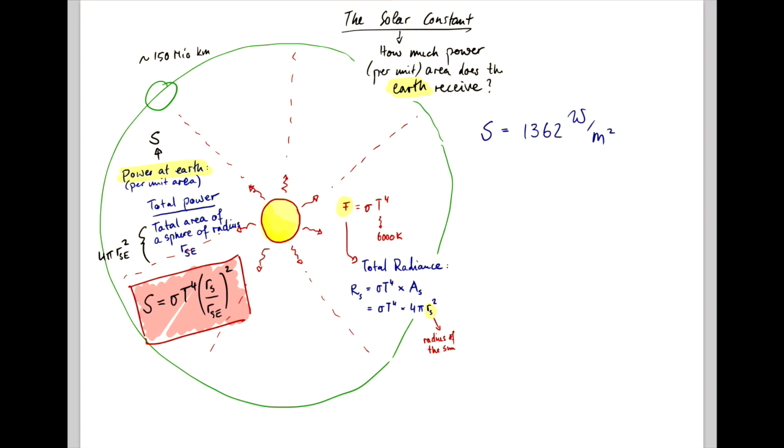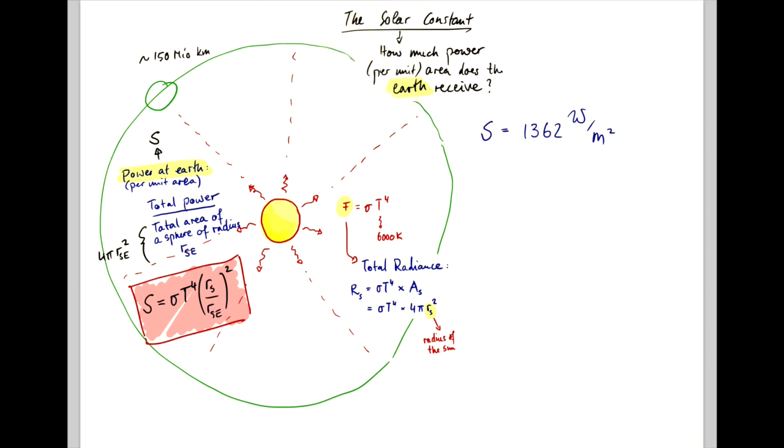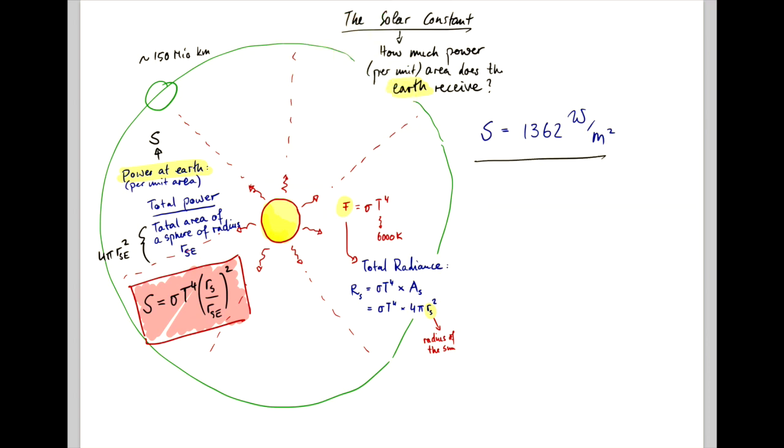And that gives us a number for solar radiance per unit area of 1362 watts per meter squared. And what's really remarkable here is that we can also measure the average power output from the Sun that reaches Earth's orbit.